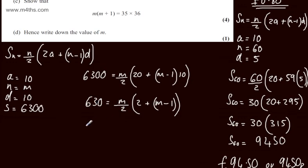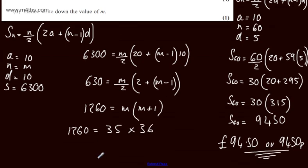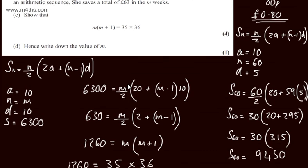Multiplying both sides by 2 we're going to have 1260 equals m. The bracket will simplify to give us m plus 1. We can state that 1260 is equal to 35 times 36. Therefore we can write 35 times 36 equals m multiplied by m plus 1. So that's one particular way in which we could do that question.